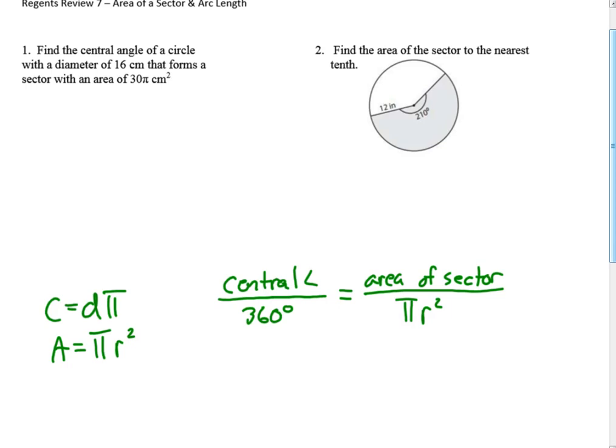Number one is asking us to find the central angle of a circle with a diameter of 16. So if the diameter is 16, that means the radius is 8, and the area of the circle, which is pi times 8 squared, would be 64 pi. So if I'm going to plug it into this, find the central angle, I'll call that x, divided by 360...